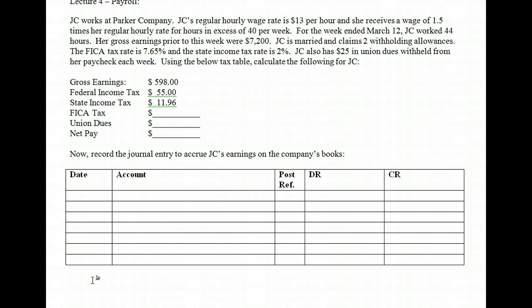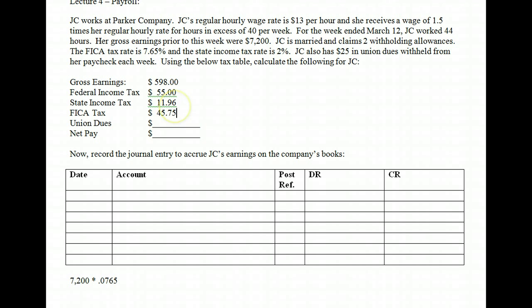This employee has only made $7,200, so there is no cap applicable at this time. We can just take the $598 and multiply it by 0.0765, and we end up getting $45.75. So as long as you're not at the cap, you simply multiply it out. The cap is only applicable to OASDI — there is no cap on HI — but our textbook combines those into one tax, so we're going to look at it as one tax as well.